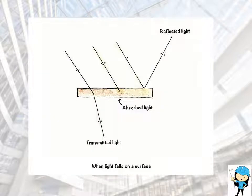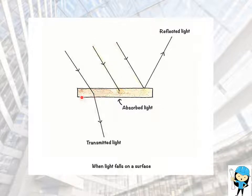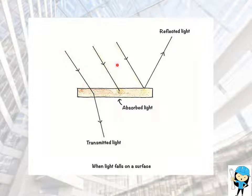We should also know about what happens to light when it falls on a surface. So this is the surface we are assuming and these are the light rays falling on it. If it is an opaque surface, the light rays falling will be completely absorbed by the surface. If it is a partially transparent surface, then the light rays will be partially transmitted and partially reflected.